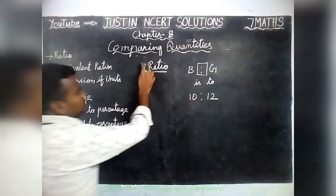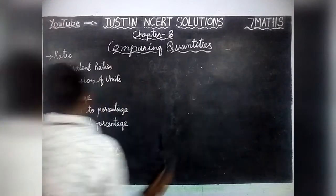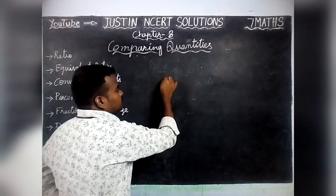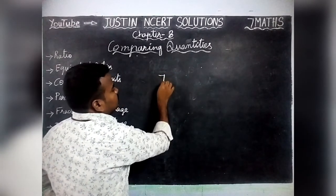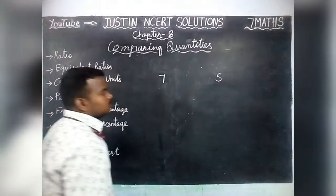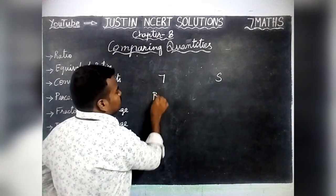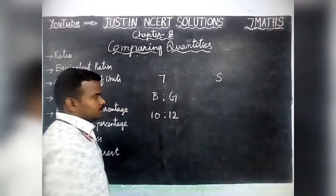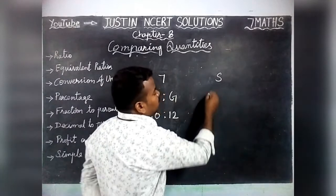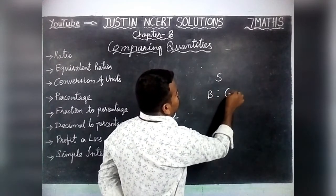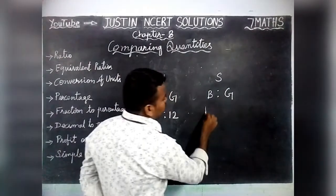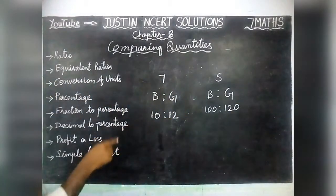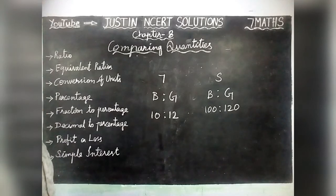Next, we are going to see Equivalent Ratios. We can compare the Ratio of 7th Standard and the Ratio of the whole School. For example, Boys and Girls Ratio in 7th Standard is 10 is to 12. Next, if the School Ratio is also the same — Total School Strength Boys and Girls — for example 100 is to 120. These two are called Equivalent Ratios.